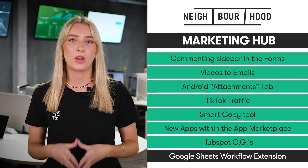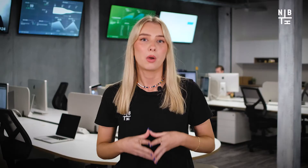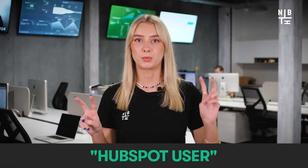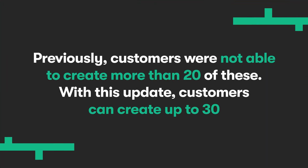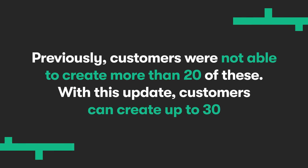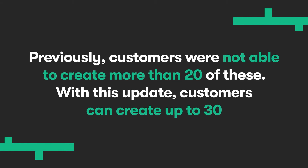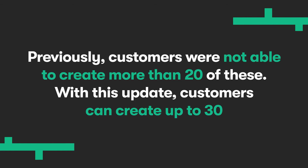Now something for the HubSpot OGs. When you create a contact, company, deal, or ticket property, there's a property type called HubSpot User that pulls dynamically from the user list in your account. Previously, customers were not able to create more than 20 of these, but with this update you can now create up to 30.